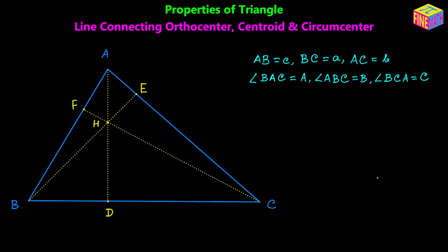Next I am going to draw the medians so that we can locate the centroid. We have the first median AJ, the second median BK, and the third median CL. The point of intersection of the medians is denoted by uppercase G, which is the centroid.